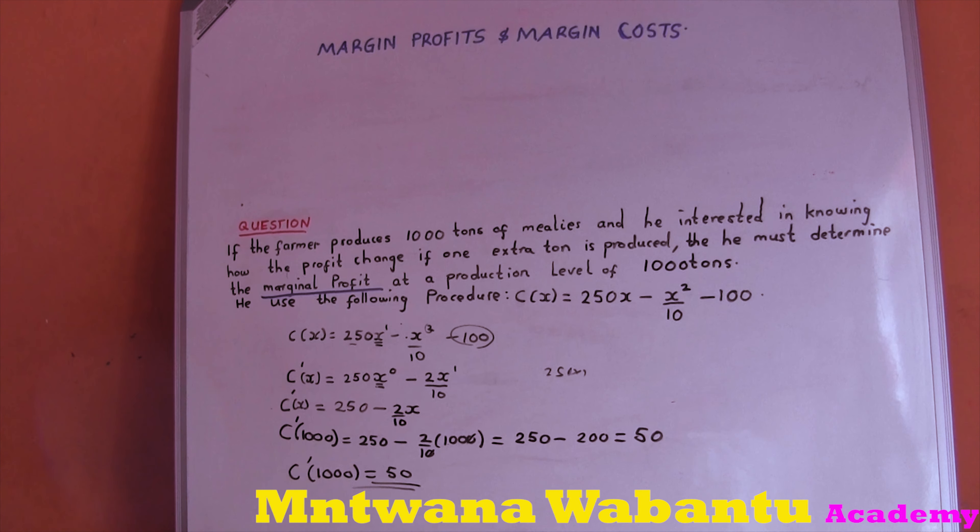Now question two: a farmer produces 1,000 tons of maize and wants to know how profit changes if one extra ton is produced — meaning find the marginal profit at a production level of 1,000 tons. The profit function is P(x) = 250x - x³/10 - 100.